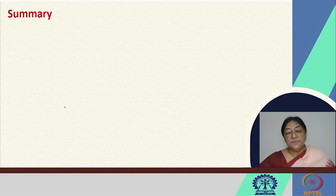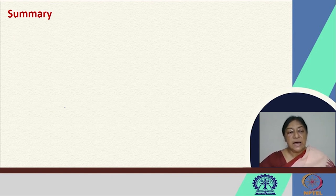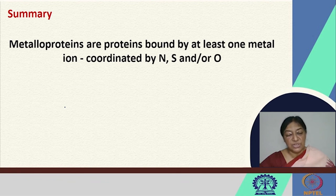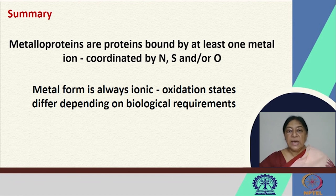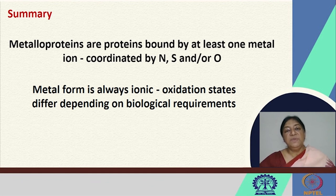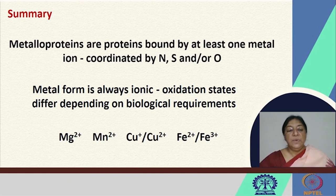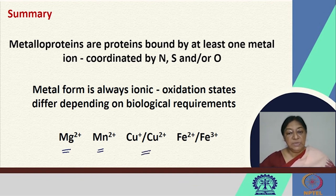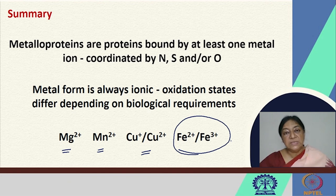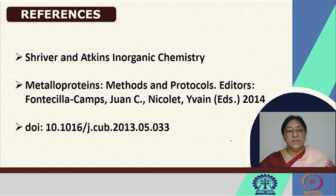In summary, metalloproteins are proteins bound by at least one metal ion coordinated by nitrogen, sulfur, and/or oxygen. The metal is always ionic and oxidation states differ depending on biological requirements, for example differing between the oxy and deoxy forms. We have looked at magnesium, manganese, copper, and zinc examples. In our next lecture, we will look specifically at iron examples — the most well-studied metalloproteins.